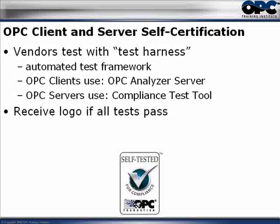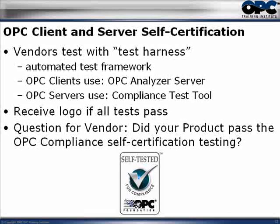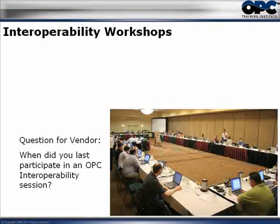What vendors can do is test their product against this test harness. Once their products pass, they will get the logo you see here at the center bottom — the self-tested logo. What you should be asking each and every vendor is: did your product pass the OPC compliance self-certification testing? The results are actually posted on the OPC Foundation website, at www.opcfoundation.org.